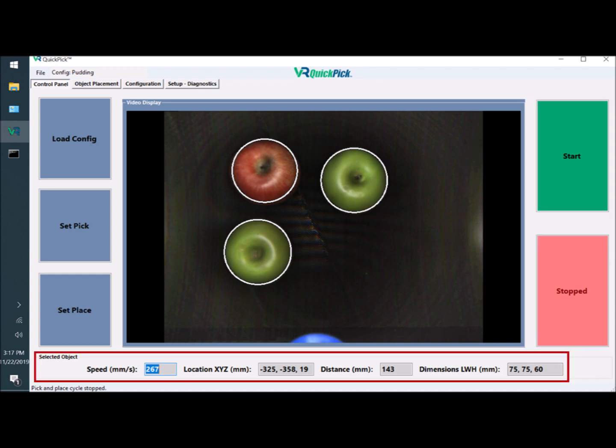At the bottom of the screen, you have extraordinary information reported real-time, including the speed of a moving object, its XYZ location, distance from the tool center position, and its dimensions.